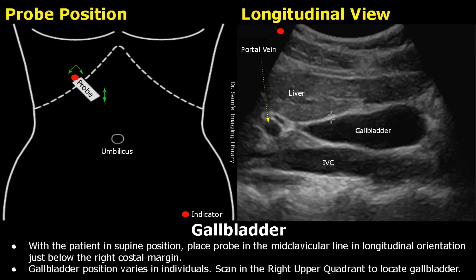On the left side is a schematic diagram of probe positioning. These dotted lines are the costal margins. Over here is the umbilicus. This white box is the ultrasound probe, and this red dot is the indicator or the orientation marker.